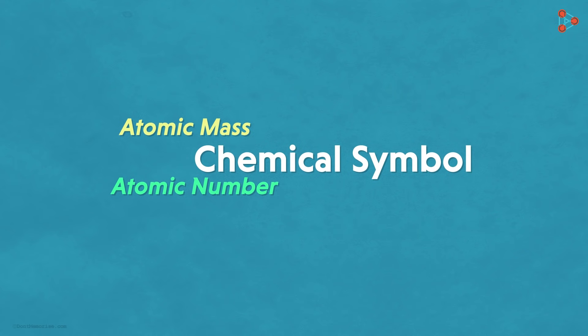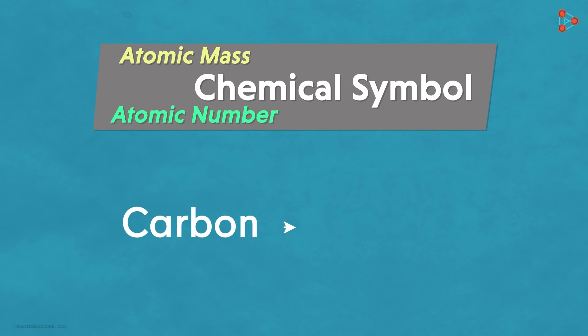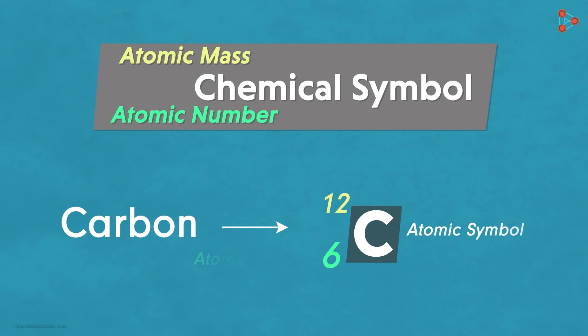Something like this: the symbol of the element, its atomic number and its atomic mass. Now how do we represent a simple element like carbon? That's right! The atomic symbol that is C, followed by the atomic number 6 and atomic mass 12 at the respective places.